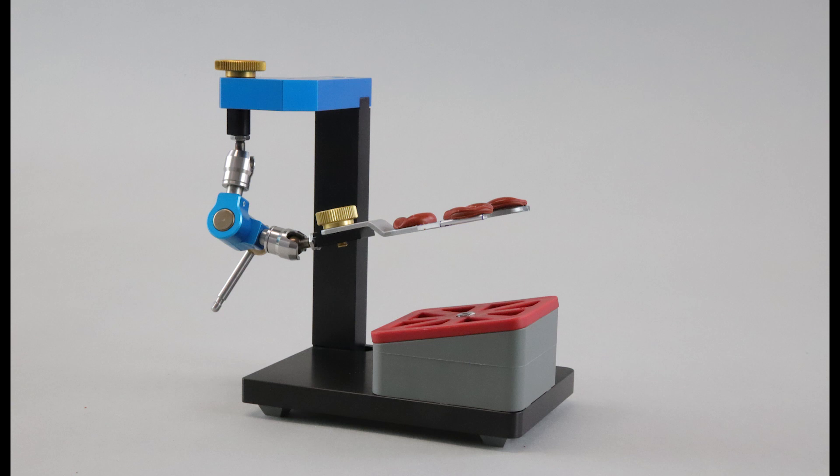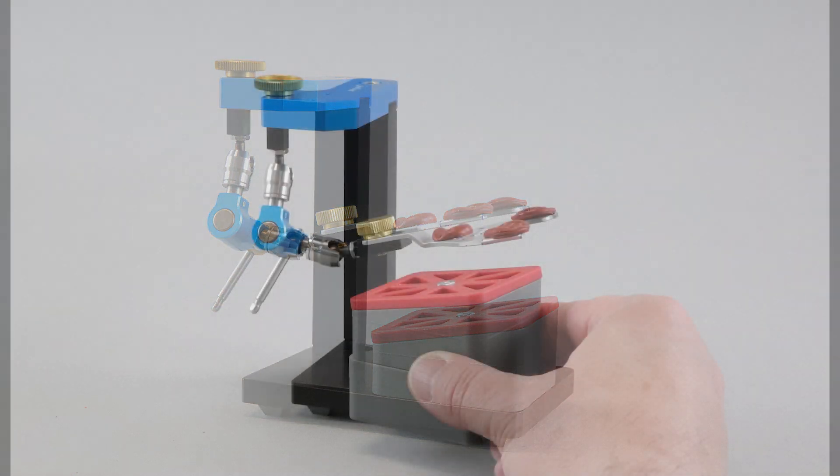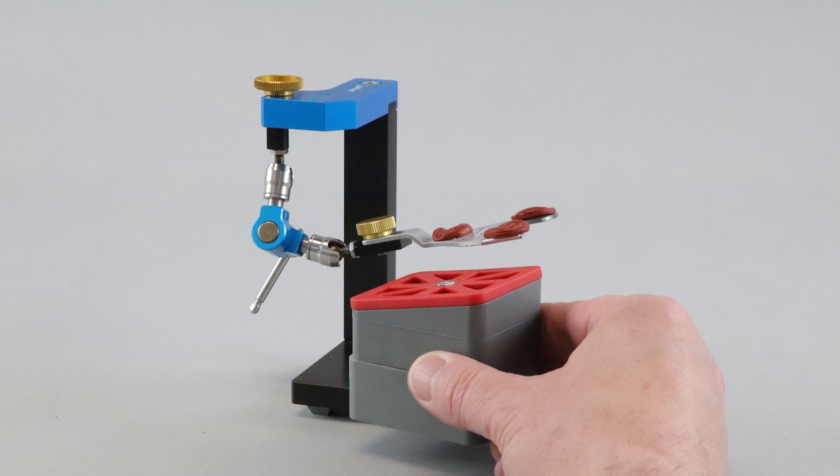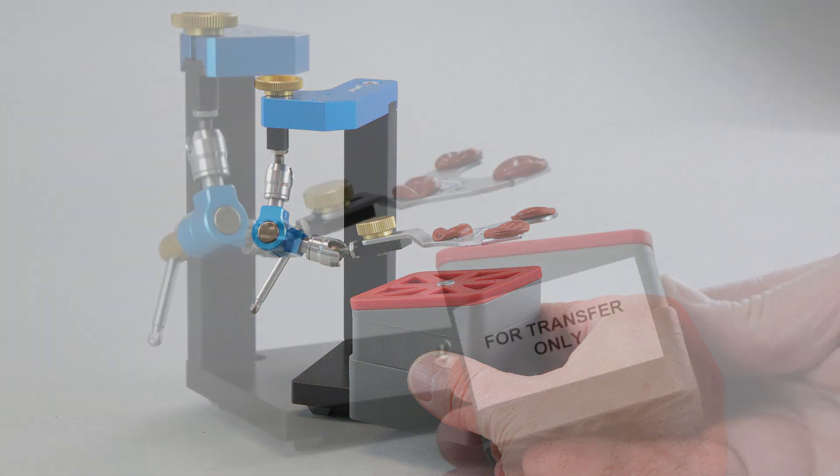The distance block with mounting plate serve as the transfer table for the bite fork. There should be minimal space between the distance block and the bite fork. Choose the distance block size which fits best.